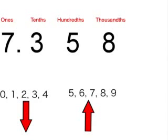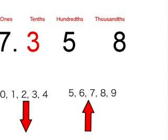Now we have the answer 4.67. The next example is with the number 7.358. We will be rounding the 3. If your number is 0, 1, 2, 3, or 4, we round down. If it is 5, 6, 7, 8, or 9, we round up.